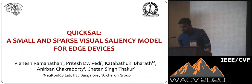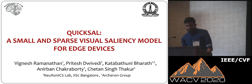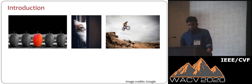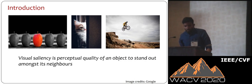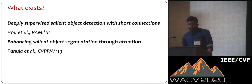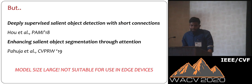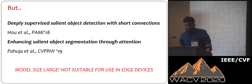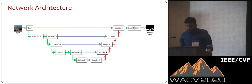Good afternoon, everyone. My name is Vignesh Shamanathan, and I'm from the Indian Institute of Science. I'm here today to present our work, QuickSal. When we look at images, we pay attention to different objects in them. The perceptual quality of an object to stand out amongst its neighbors is known as visual saliency. Existing methods result in models that are large in size and not suitable for use in edge devices. So we propose a solution: QuickSal.